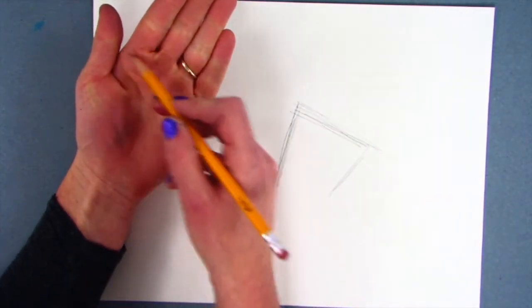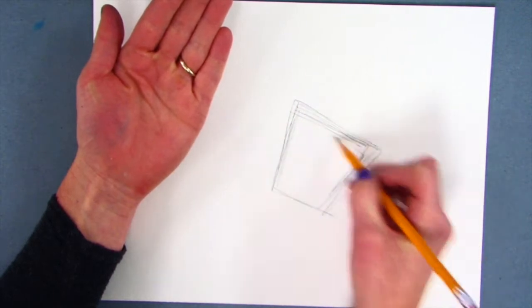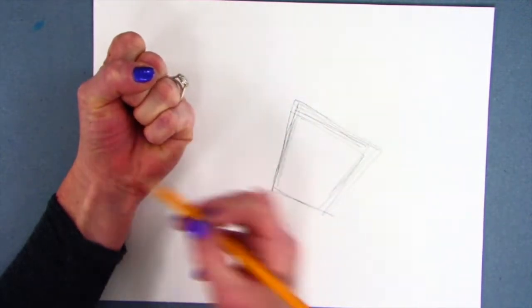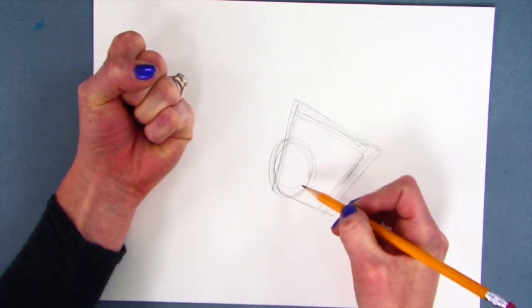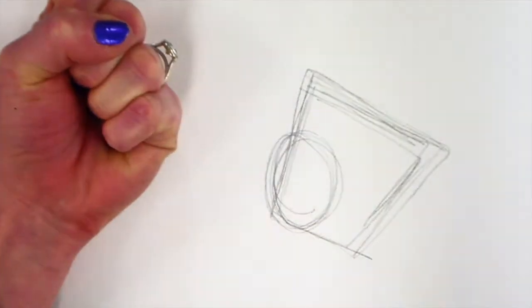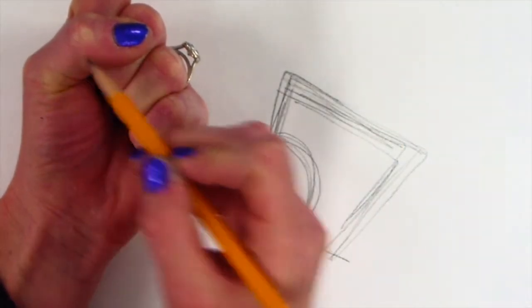I start with a square. That's the palm of my hand. Then I move to an oval which indicates the muscle of my thumb. That's the largest muscle your hand has. Draw that as an oval.